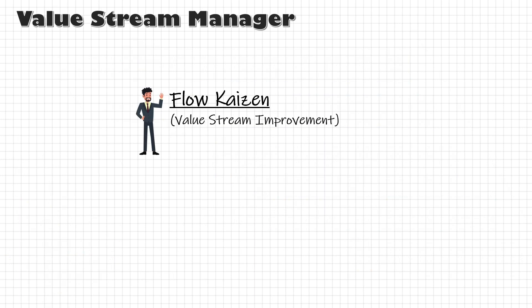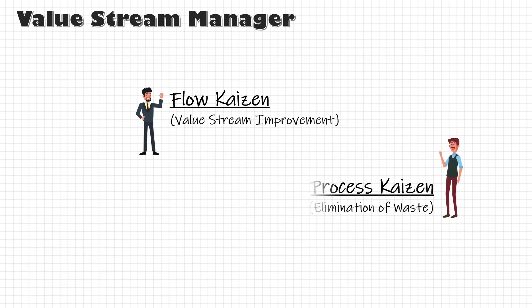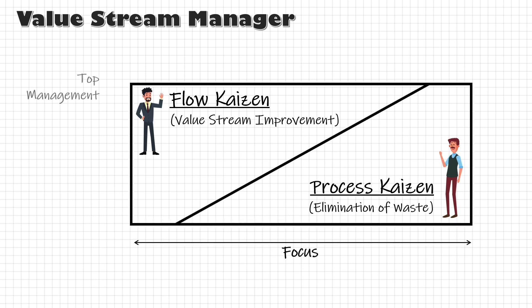Both flow kaizens — that is value stream improvement — and process kaizens — that is cycle time improvement — are necessary in your company. Improvement in one improves the other. But the focus of the value stream manager and top management should be on flow kaizens, which require a high vantage point to see and have greater impact on the flow. Process kaizens like cycle time improvement and waste elimination are to be left with the frontline or area managers.